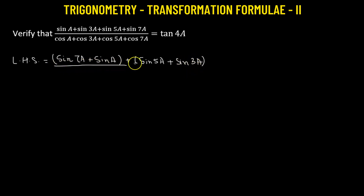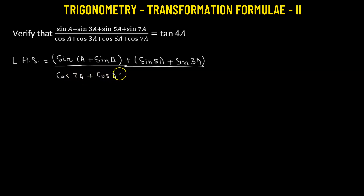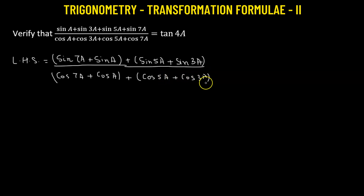This will be divided by the denominator. Similarly in the denominator we have the sum of cosine terms. We will take cosine of 7a added to cosine of angle a as the first term, and then we have the remaining terms: cosine of 5a added to cosine of 3a. The trick is that 7a plus a equals 8a, and 5a plus 3a also equals 8a — we are making sure the sum of angles remains the same in both pairs, similarly in the denominator.